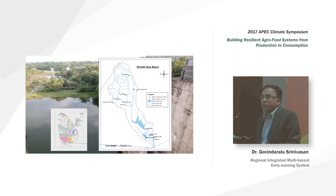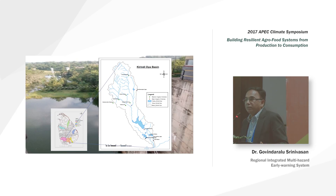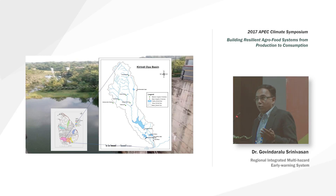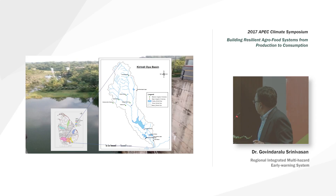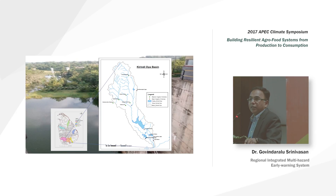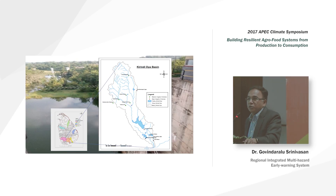The water sector project is a reservoir management system using climate and weather information, since most sectors are not even using weather information on a regular basis. When building these systems, you start with weather forecasts and then integrate seasonal predictions. This was set up for a basin in southern Sri Lanka — a relatively dry area with a large command area for irrigated paddy cultivation — called the Kirindi Oya basin.